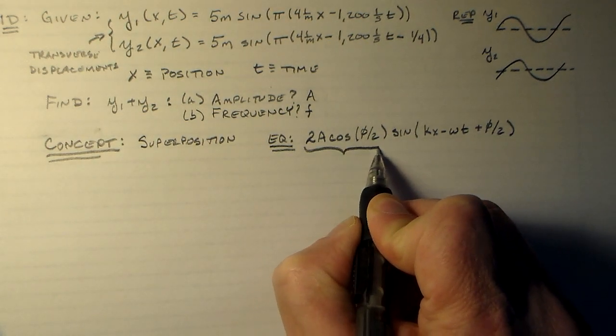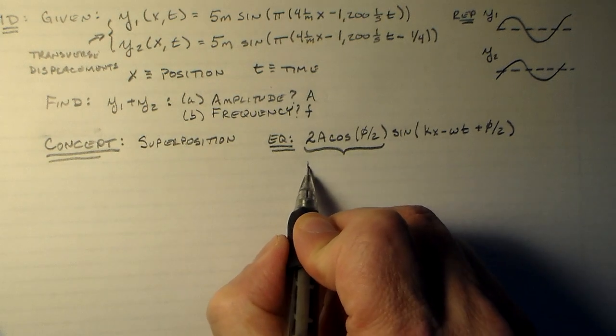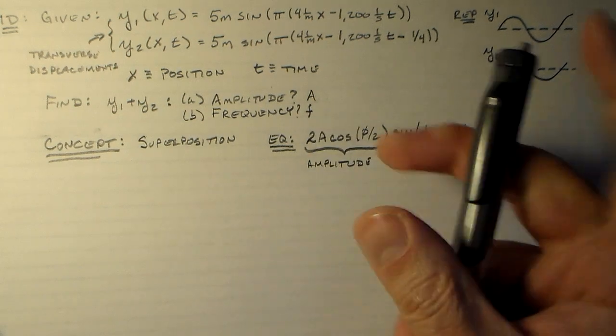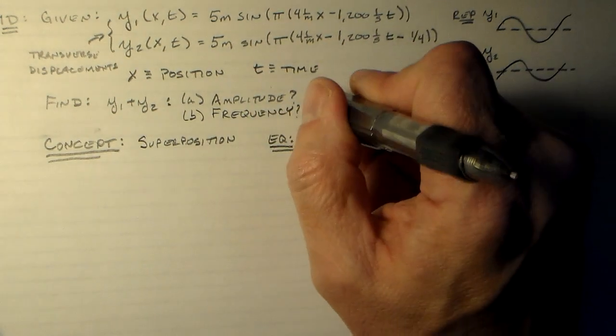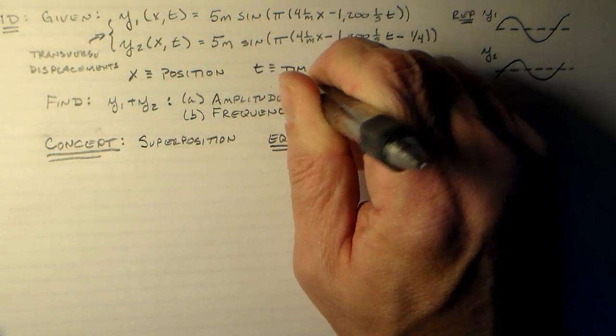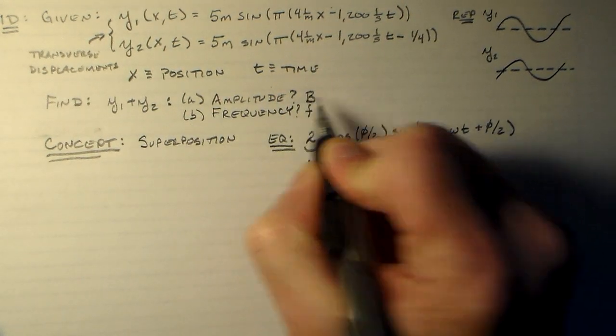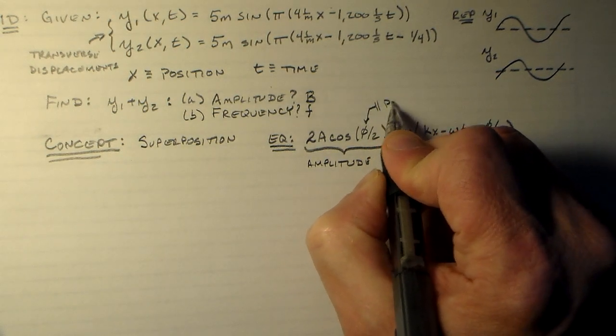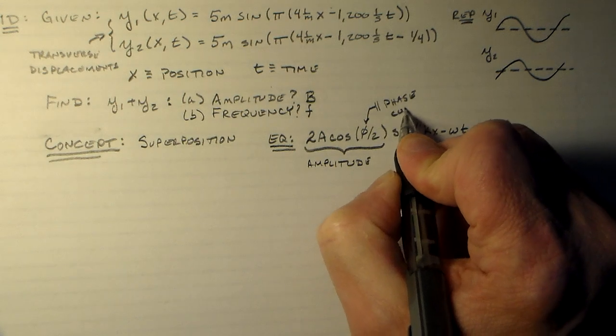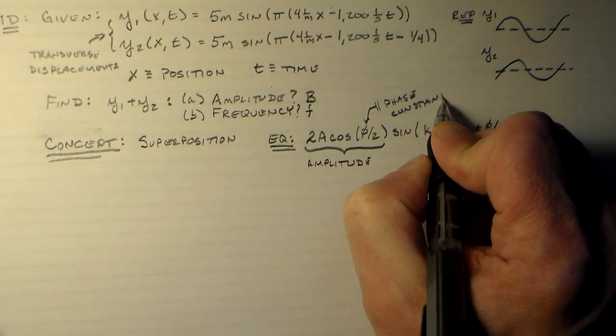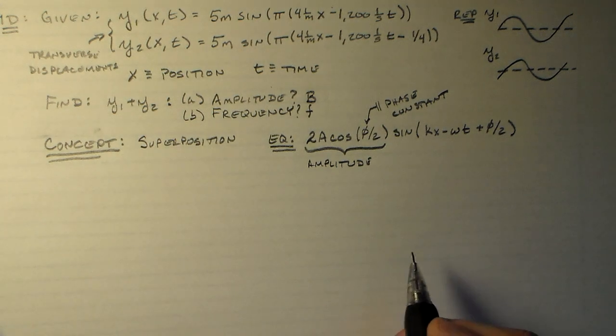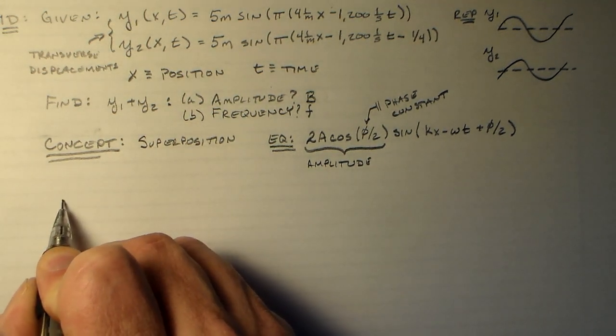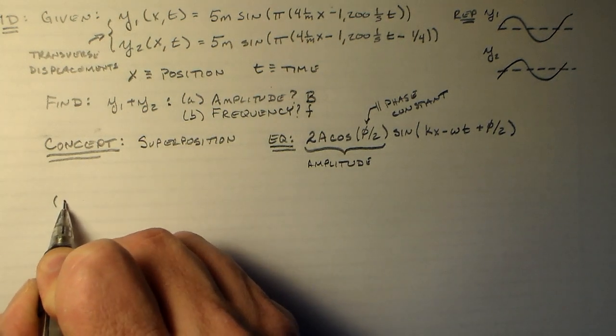This part here is going to be the amplitude, which means this A is not good. It's defined as something else in here so let's call it B. And this guy here is the phase constant. And we know what all these other things are pretty well by now. So basically, for part A,